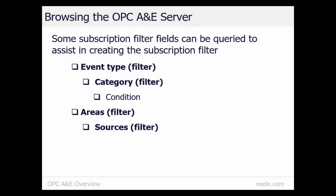When creating a subscription filter, it helps to know the allowed values for the filter fields. For example, if you want to allow events from certain sources, it would help to know the allowed source names. If supported, the OPC A&E server can be queried for the allowed values of the five primary event fields. If you try our free OPC A&E test tool, the Subscription Filter Builder allows you to query this information from the server and copy it into your subscription filter.